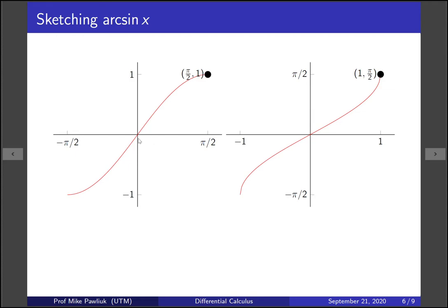Similarly, zero zero here gets reflected, but it doesn't move, it's still zero zero. And then finally, this point right here is minus pi over two minus one, and when you change the x and y here, you get something that is minus one minus pi over two.